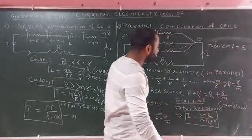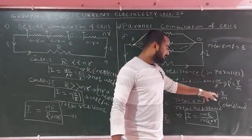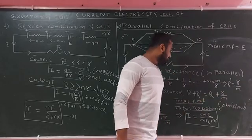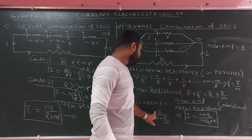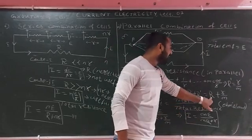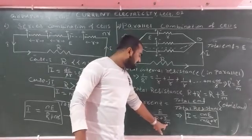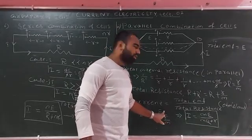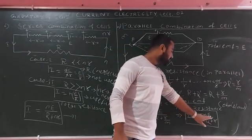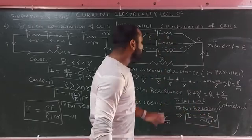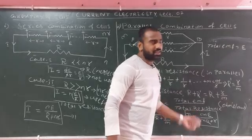So the current flowing through a parallel combination of cells is: I equals total EMF divided by total resistance, which is E divided by (R plus R/M). Simplifying, I equals ME divided by (MR plus R). This is the current formula for the parallel combination of cells.